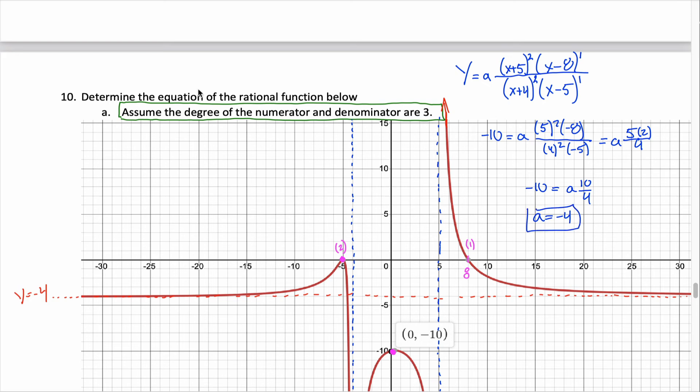What I'm saying is my answer is that y is equal to negative 4 times x plus 5 squared times x minus 8 to the first power divided by x plus 4 squared times x minus 5 to the first power. And if you want to write this negative 4 up on the top of the fraction, you can, or if you want to write it out in front of the fraction, that's totally fine too.